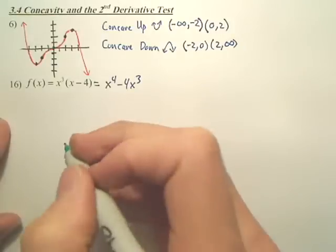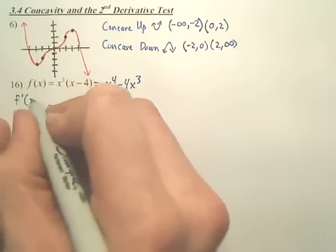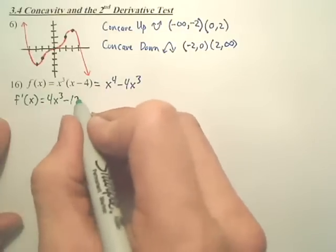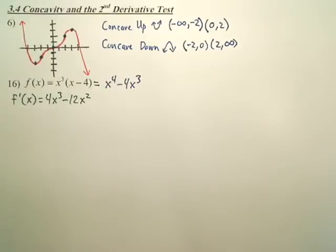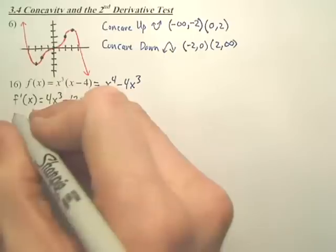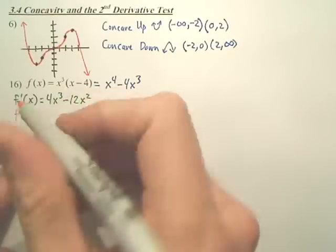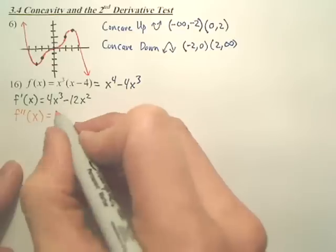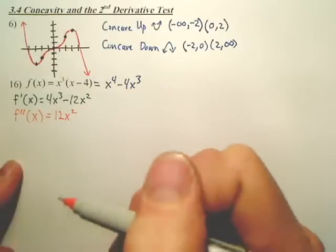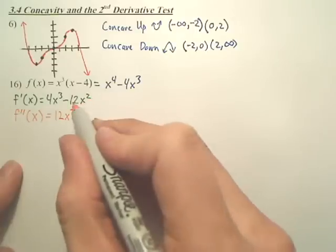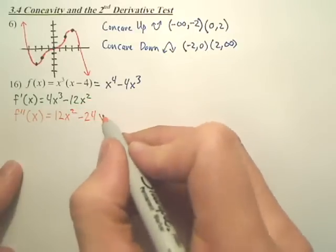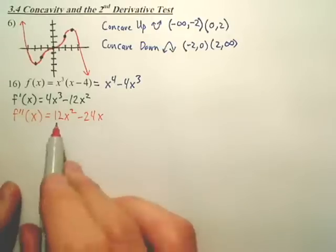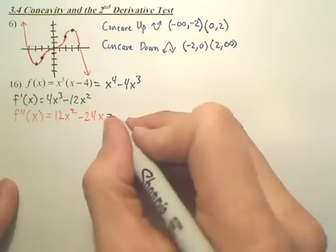So our first derivative is 4x³ minus 12x². Our second derivative, because that's what we're going to set equal to 0, it has two little marks by the way. Derive this. Well, 3 times 4 is 12, bring down the power of the exponent, and 2 times negative 12 is negative 24, and bring down the power makes it a 1.